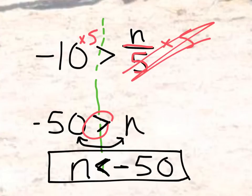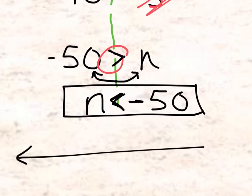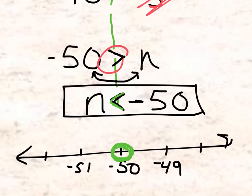Now that we have that, we can graph it on a number line pretty quickly. I'll put negative 50 in the center. I'll draw my dot at negative 50, and since it is less than — not equal to — it's going to be an open circle, and I'm going to draw the arrow to the left because it's less than negative 50.